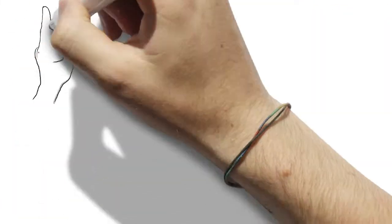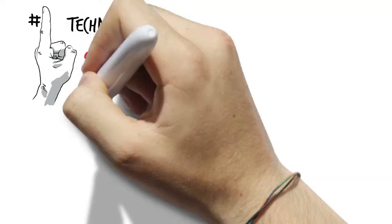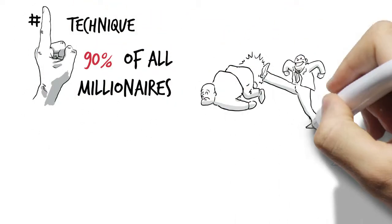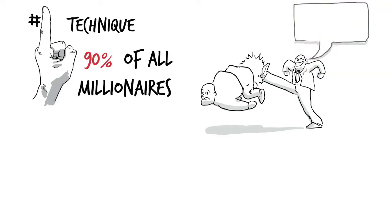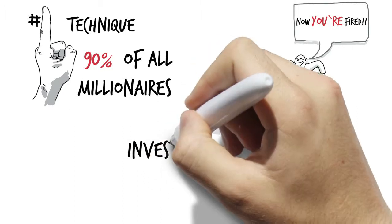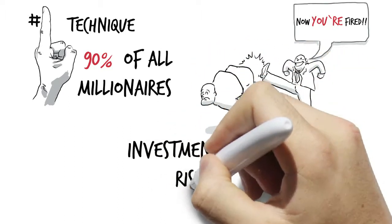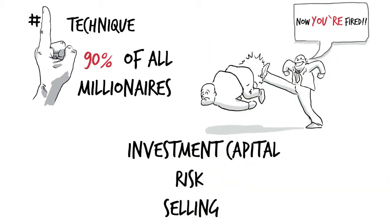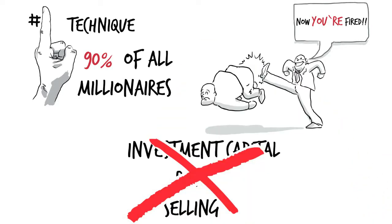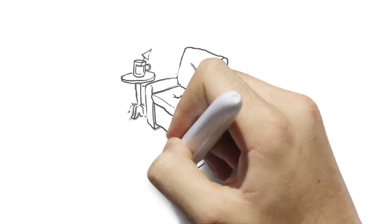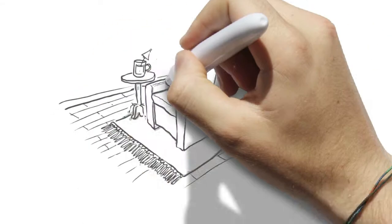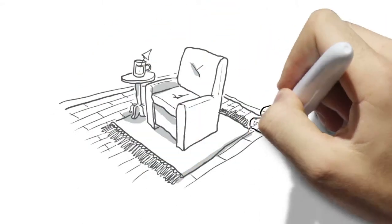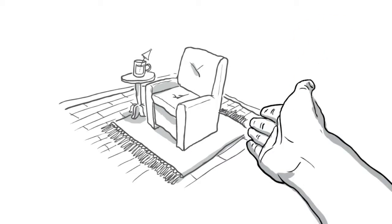Now what's more, I'm going to show you the number one strategy that 90% of all millionaires have used for the past 120 years to fire their boss, get rich, and live life on their own terms. The best part is it doesn't require any of the investment capital, risk, or selling normally associated with owning your own business. So sit back, relax, and prepare to have your financial paradigm ripped to shreds as the reality of what's really possible presents itself to you maybe for the first time.